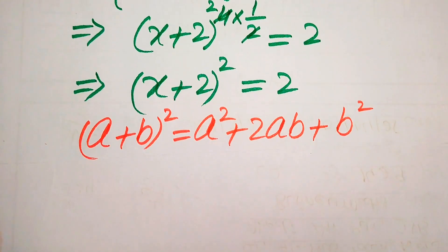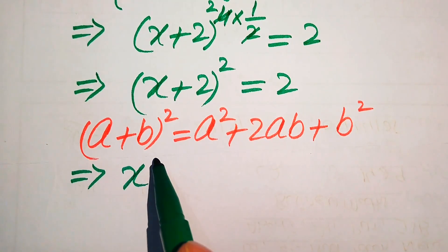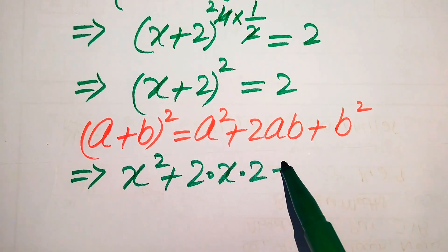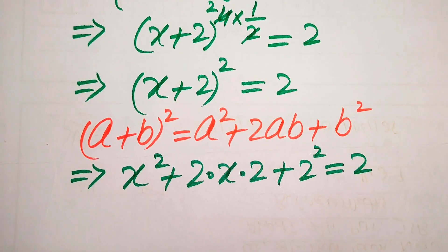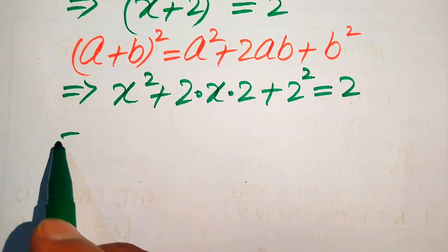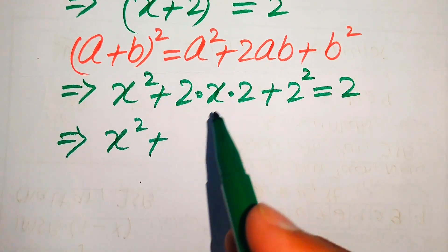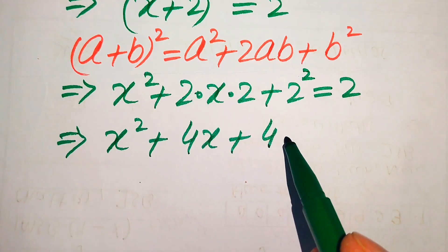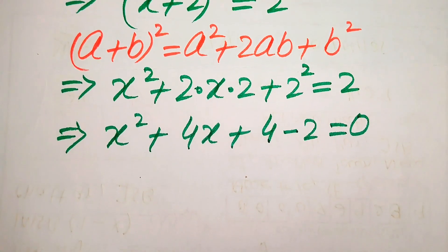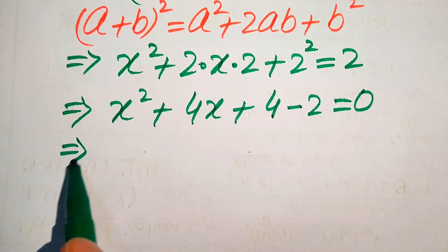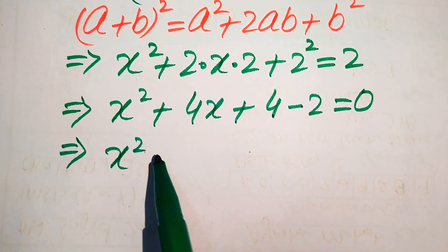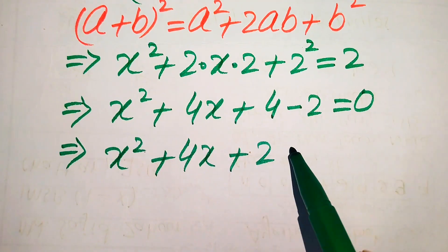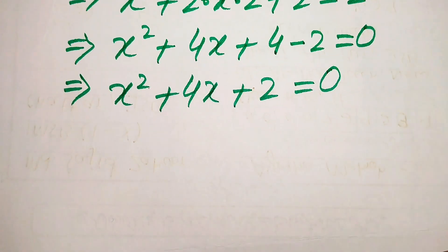Applying this formula to the left-hand side, where a is x and b is 2, our equation becomes x^2 + 2(x)(2) + 2^2 = 2. In the next step this is x^2 + 4x + 4 = 2. Moving the 2 to the left-hand side gives x^2 + 4x + 4 - 2 = 0, which simplifies to x^2 + 4x + 2 = 0.